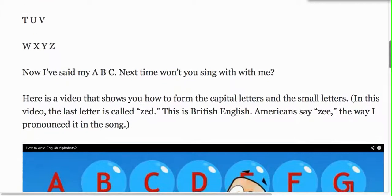Here's a video that shows you how to form the capital letters and the small letters. In this video, the last letter is called Z. This is British English. Americans say Z the way I just pronounced it in the song.